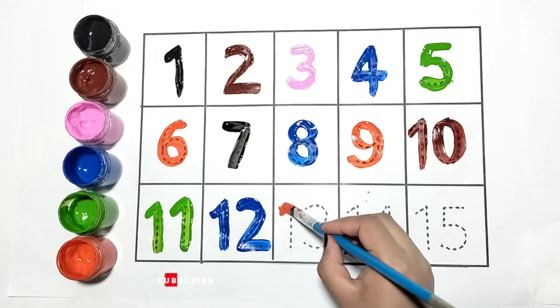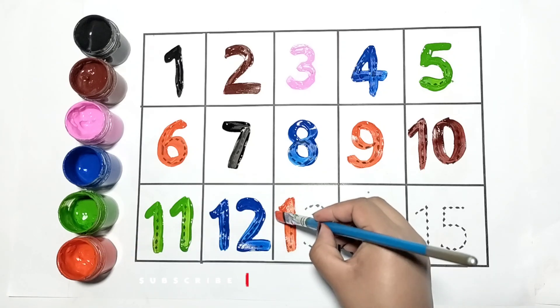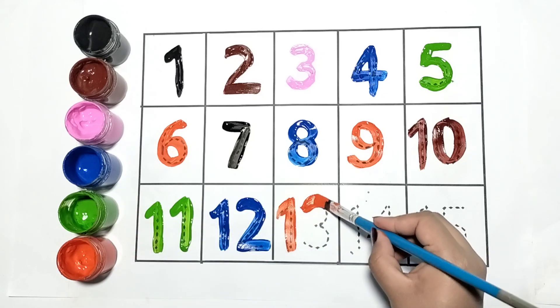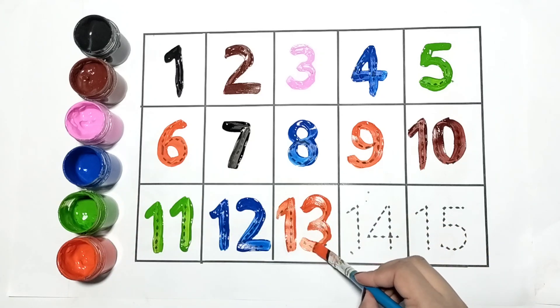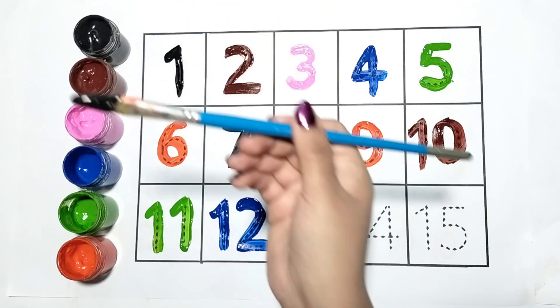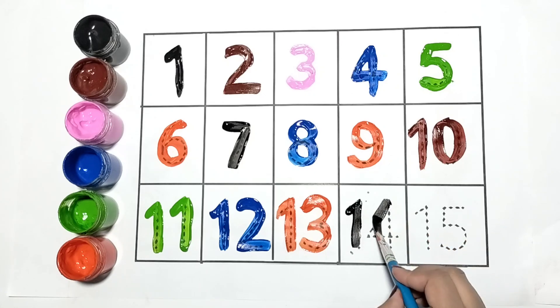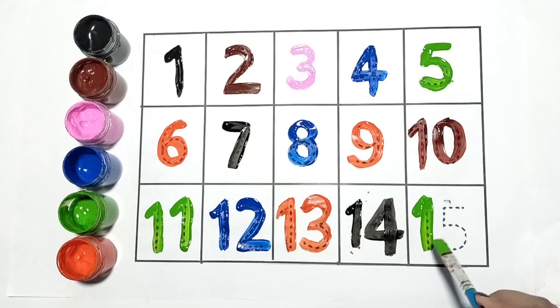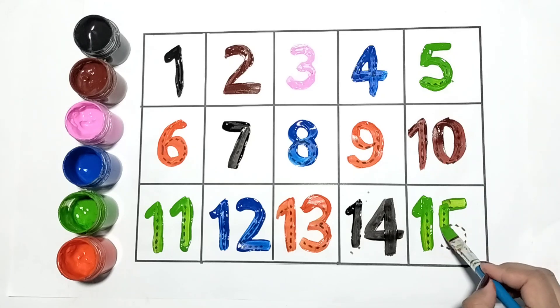Now let's write 13. This is number 13. Now I am writing 14. This is number 14, it is in black color. Now I am writing 15, it is in green color.